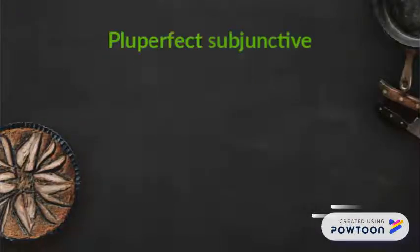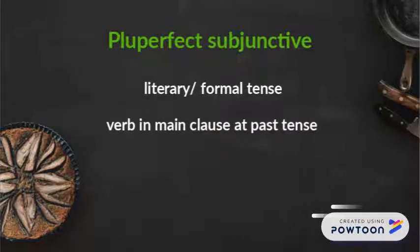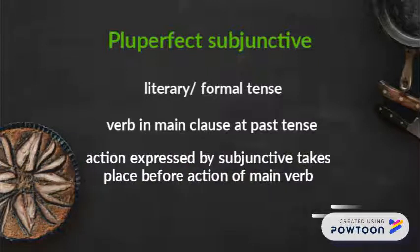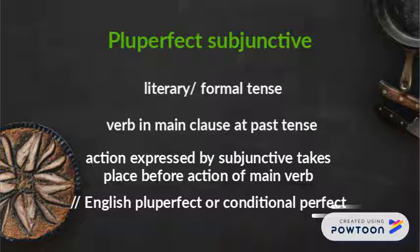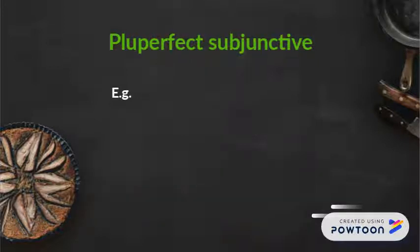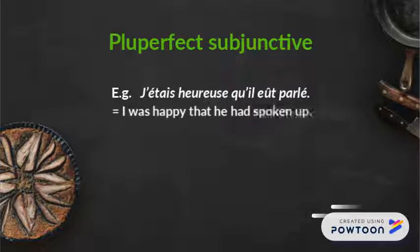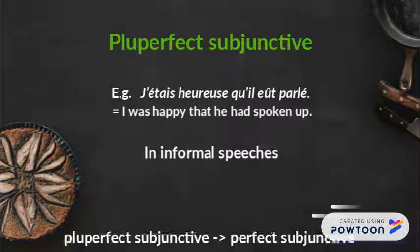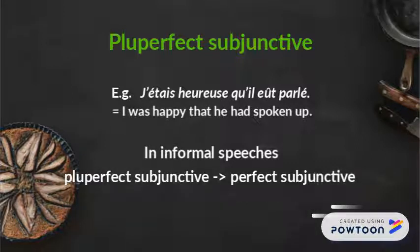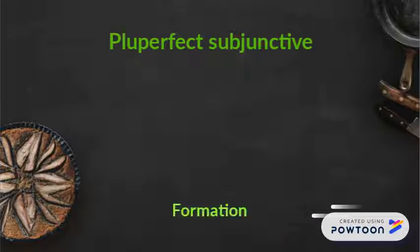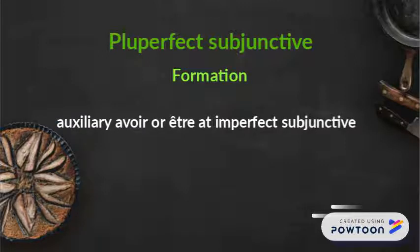Finally, the pluperfect subjunctive is also a literary or formal tense. It is used when the verb in the main clause is at a past tense and the action expressed by the subjunctive takes place before the action expressed by the main verb. It corresponds to the English pluperfect or conditional perfect. For instance, 'j'étais heureuse qu'il eût parlé' means 'I was happy that he had spoken up.' In informal speech, the pluperfect subjunctive is replaced by the perfect subjunctive. The pluperfect subjunctive is formed like any compound tense: take the auxiliary avoir or être at the imperfect subjunctive, followed by the past participle of the verb.